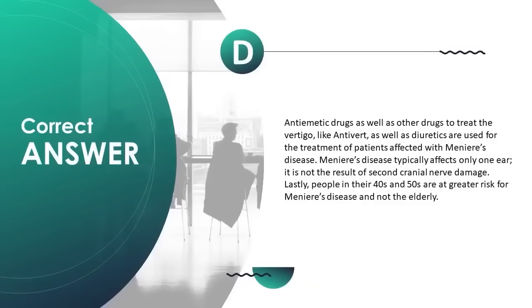Antiemetic drugs, drugs to treat vertigo such as anti-vert, and diuretics are used for treatment of Ménière's disease. Ménière's disease typically affects only one ear and is not the result of second cranial nerve damage. People in their 40s and 50s are at greater risk, not the elderly.